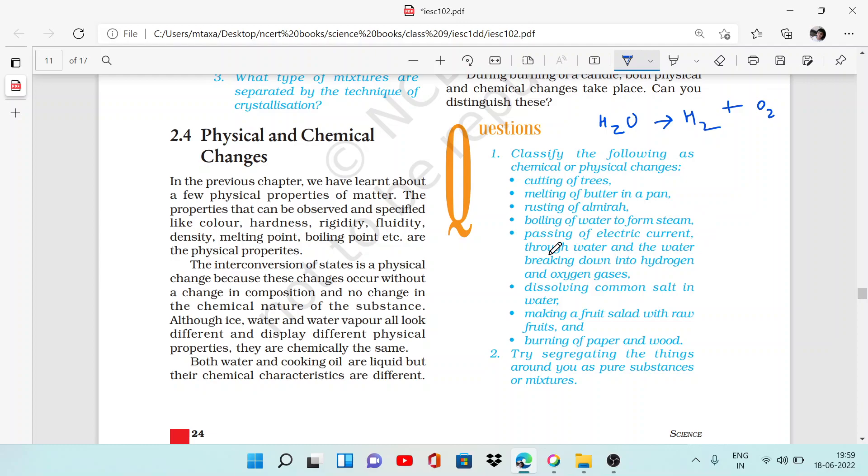Dissolving common salt in water—you have NaCl plus water. This is a chemical reaction: NaCl + H2O produces HCl + NaOH.